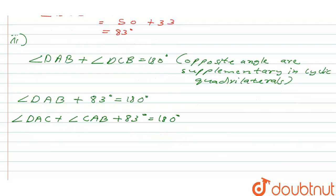Now as we know we have the value of DAC also, that is 27 degrees. So angle CAB plus 83 is equal to 180 minus 27 degrees. Or we can write angle CAB will be equal to 180 minus 27 minus 83 degrees.